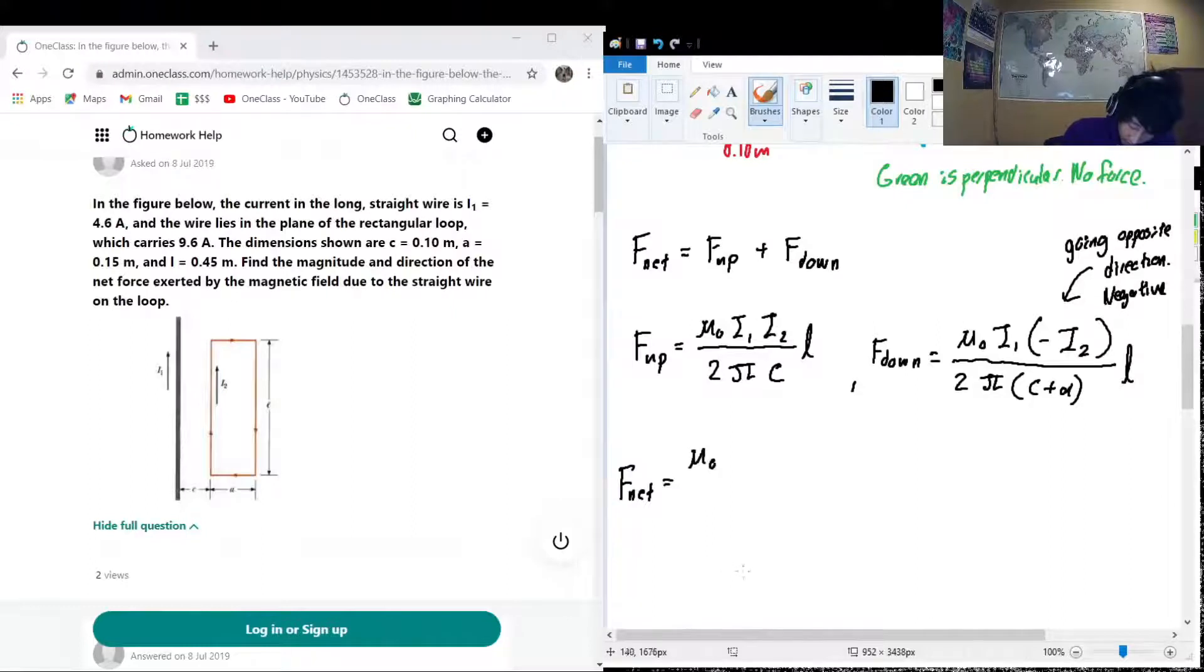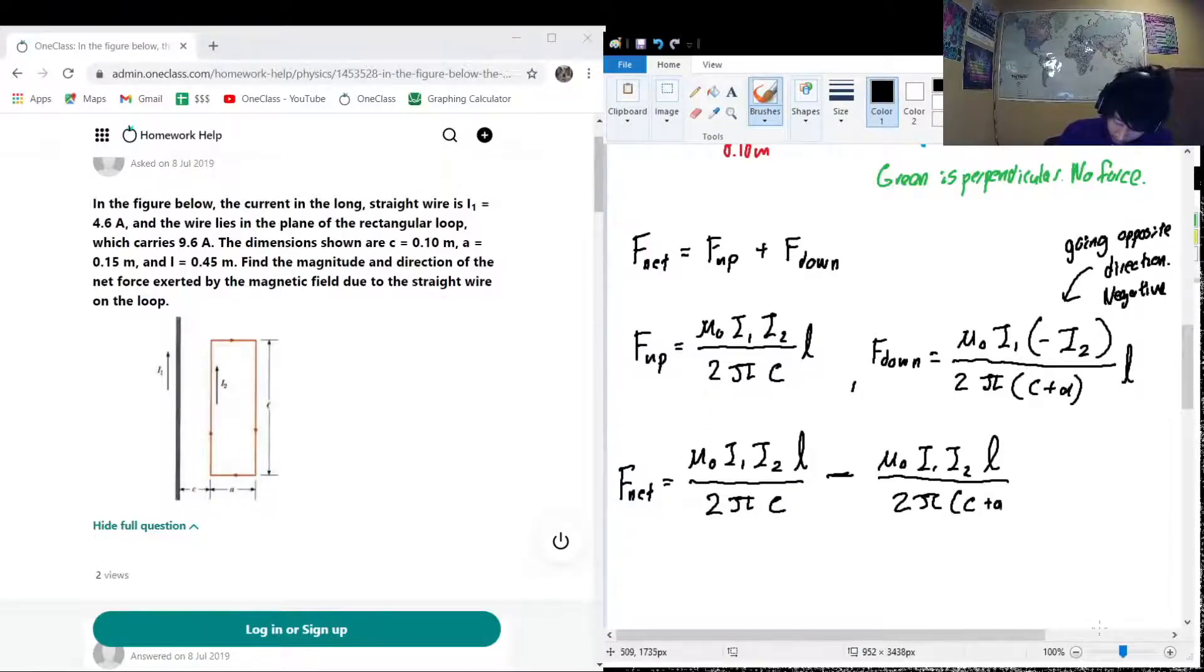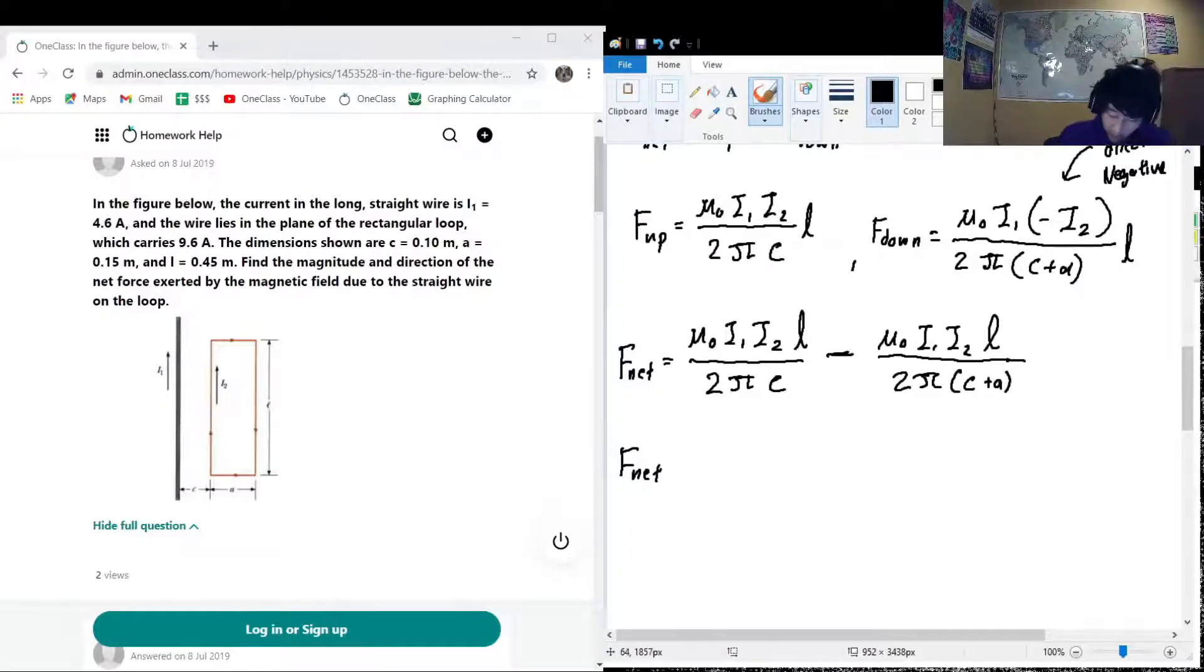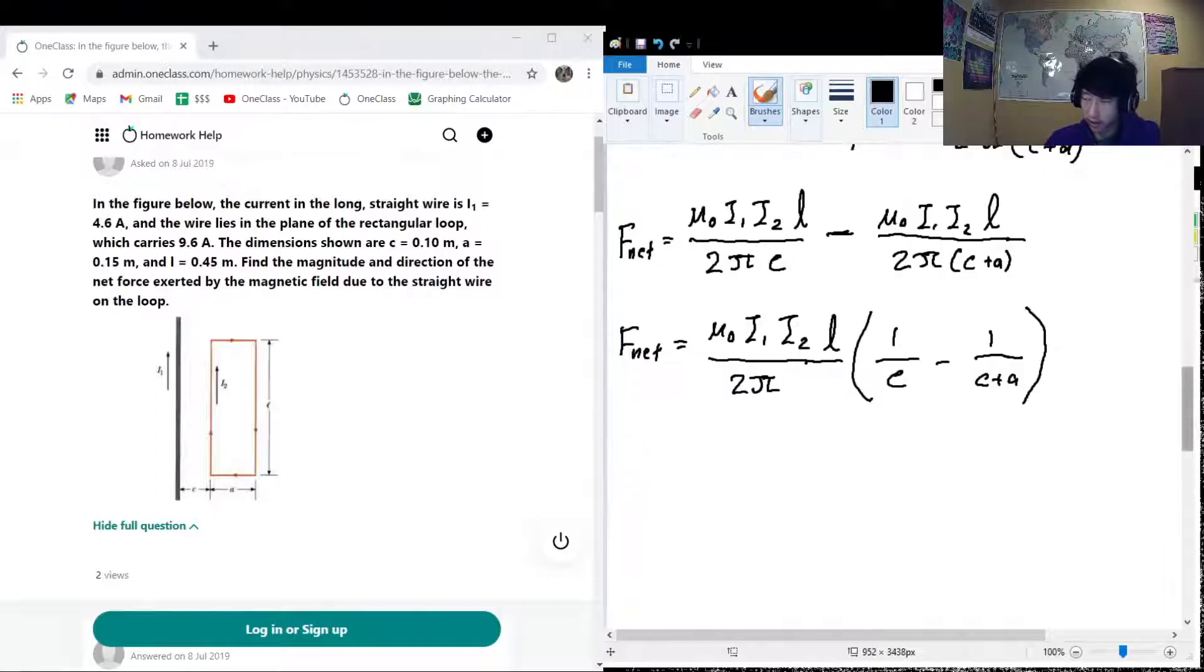Let's incorporate these into our equation above. So f net, instead of f up, we'll write out mu naught i1 i2 l over 2 pi c minus mu naught i1 i2 l over 2 pi c plus a. And we can factor this out to make our calculation a little bit easier. So we factor out every one that's common to these two terms. So that will be mu naught is common to both, i1 is common to both, i2 is common to both, 2 pi on the downstairs is common to both, and l on the upstairs is common to both. And then all that is left that is different is going to be one over c minus one over c plus a. This will be our expression for this situation, and then we can sub in some numbers and get the final result of the net force.